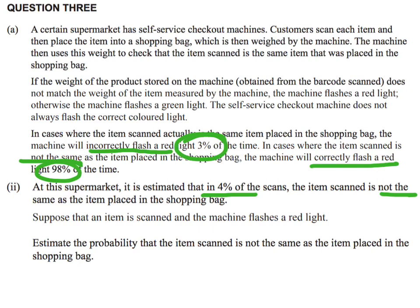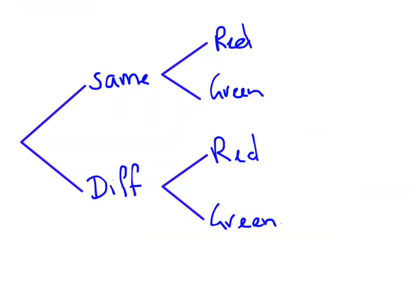Starting with the 4%: it says that in 4% of scans, the item scanned is not the same as the item placed in the shopping bag. So 4% of the time the items are different, which means the items must be the same 96% of the time, because those two probabilities must add up to 100%.